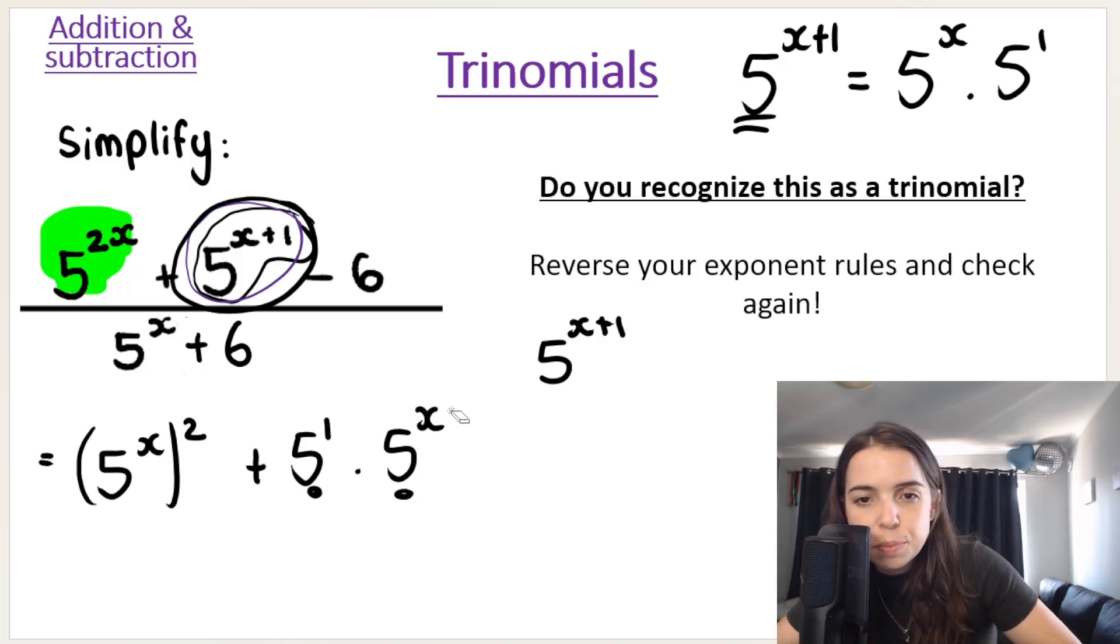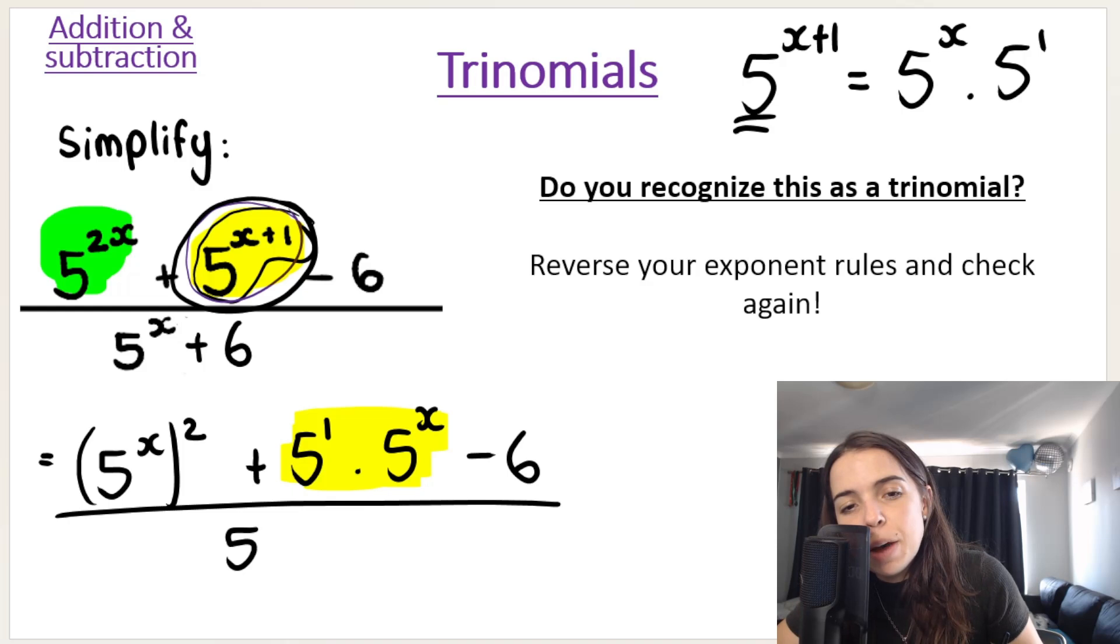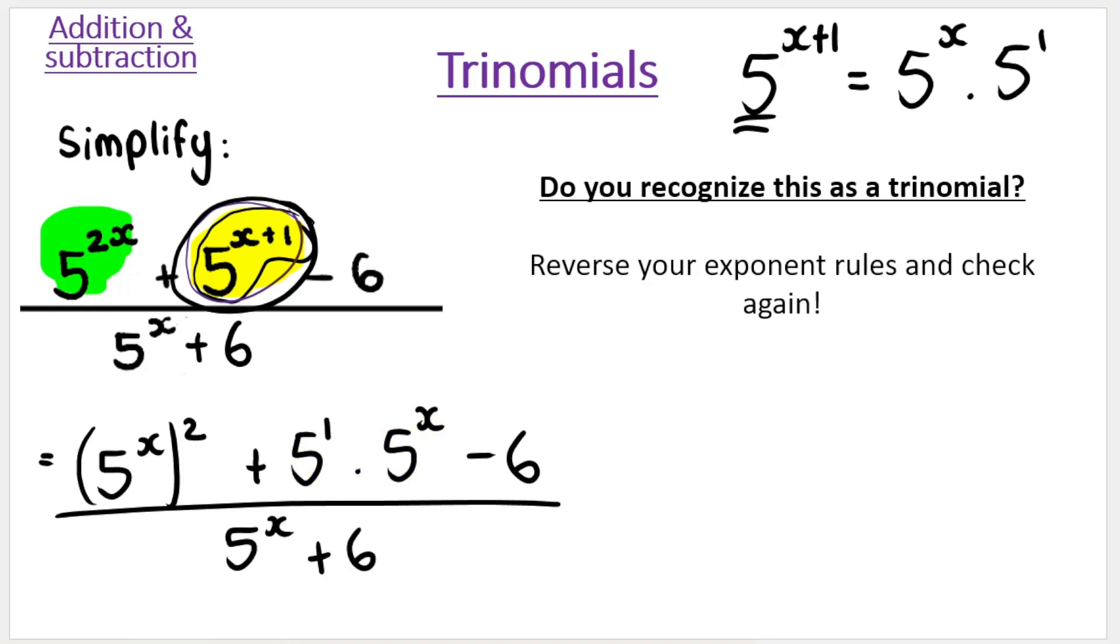So I haven't changed the expression. All I've done is I've rewritten it. So instead of this, I'm writing it like that. And then the minus 6. And then I'm dividing that by 5 to the power of X plus 6. So how does it match up? How does this look like a trinomial?